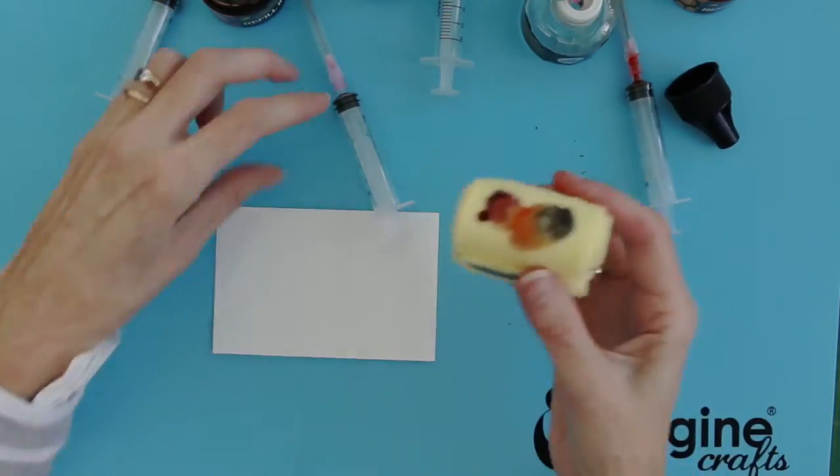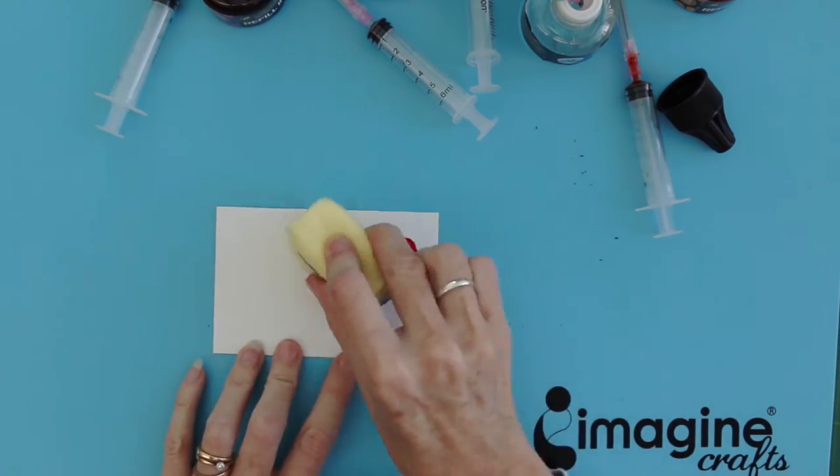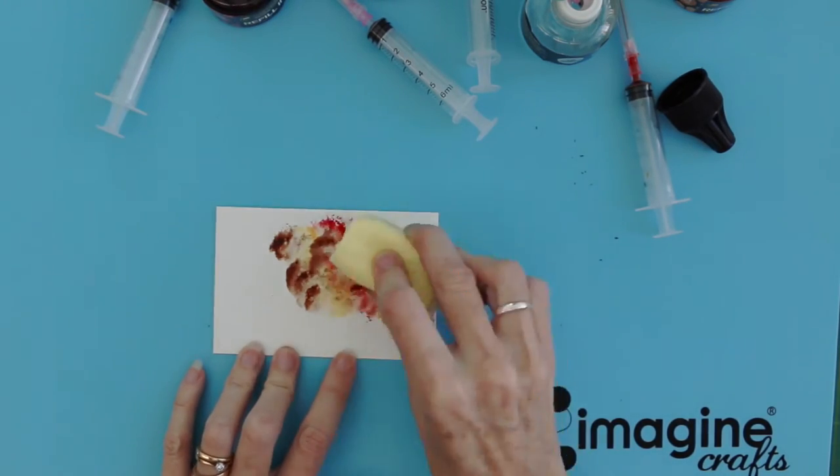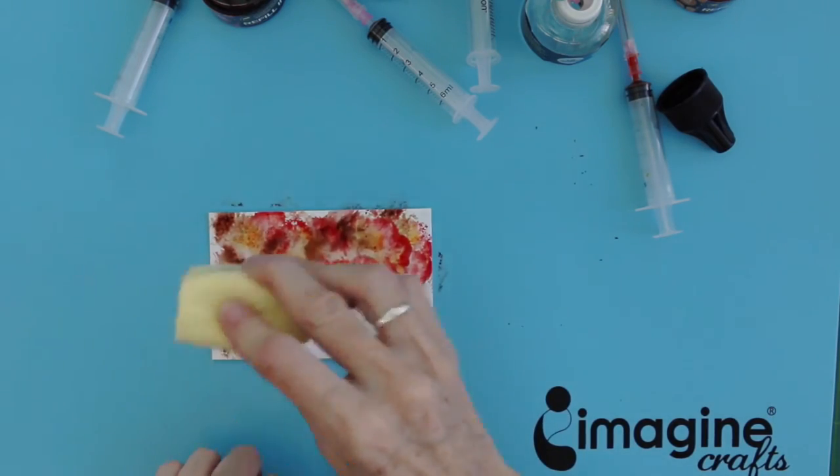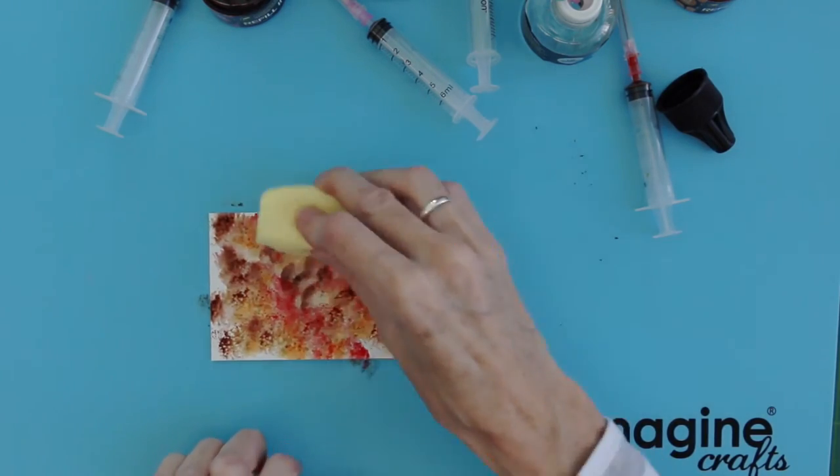You're now ready to begin pouncing up and down onto your card. Twist and rotate the dauber as you go and make sure that you don't overwork and muddy the inks.